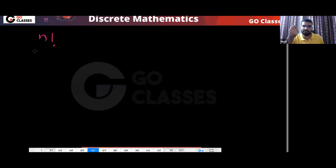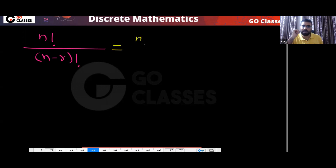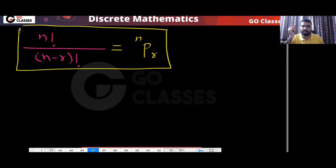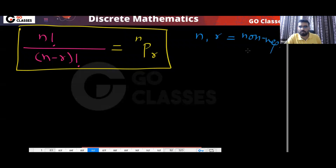Whenever you see n factorial divided by (n minus r) factorial, we write it in short as NPR. This is the definition of NPR: NPR means n factorial divided by (n minus r) factorial. Here n and r both must be non-negative integers, and r must be less than or equal to n.